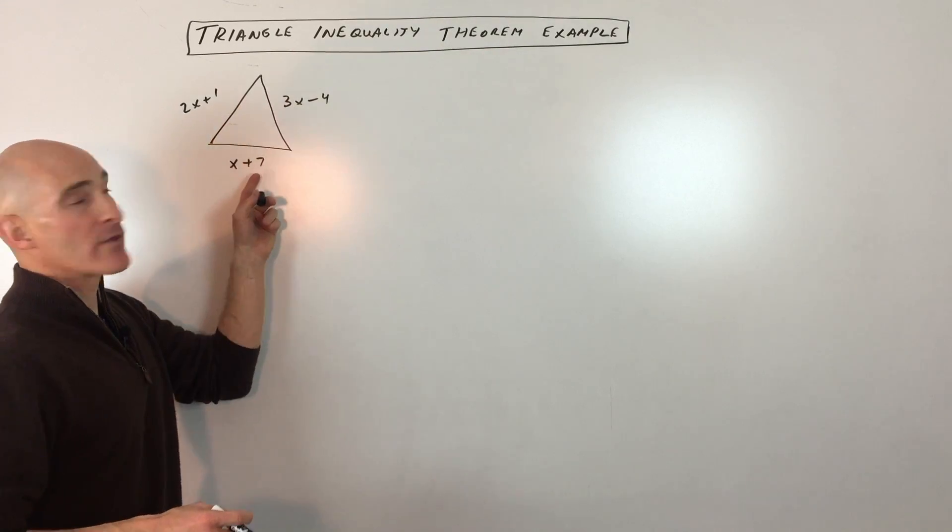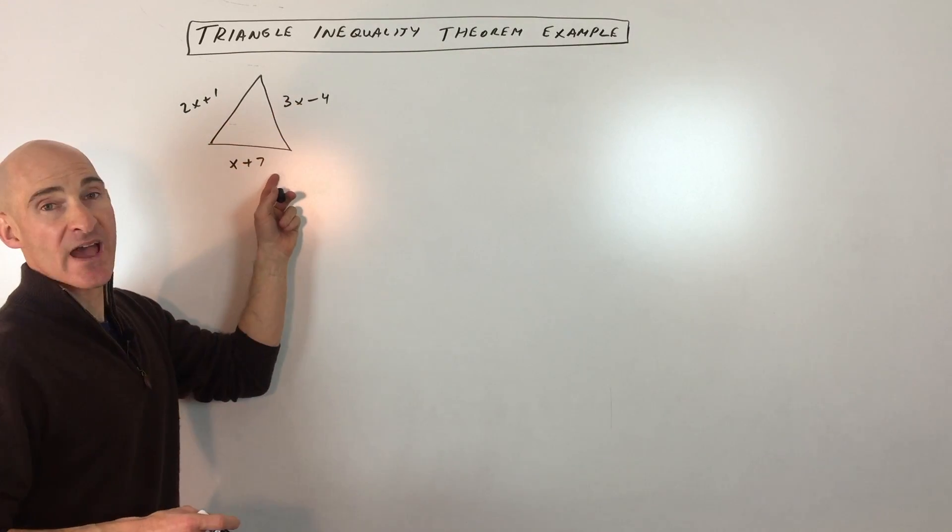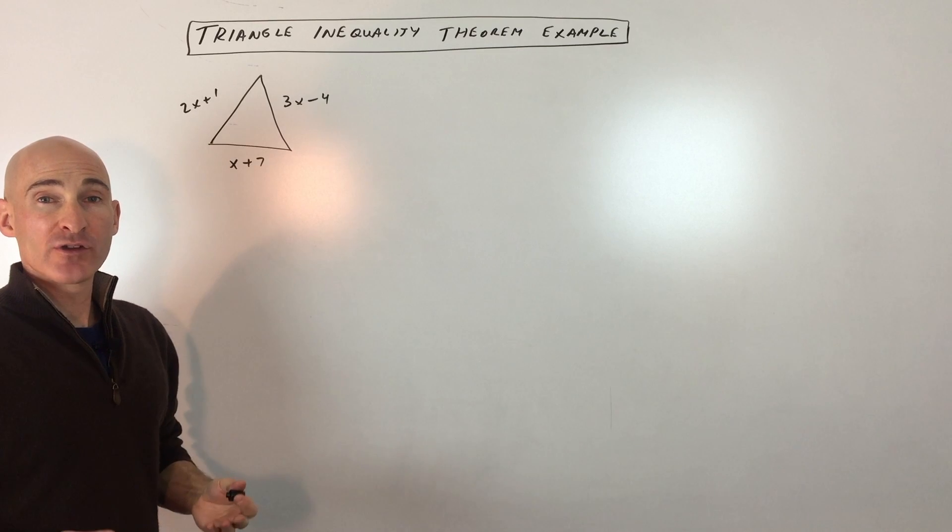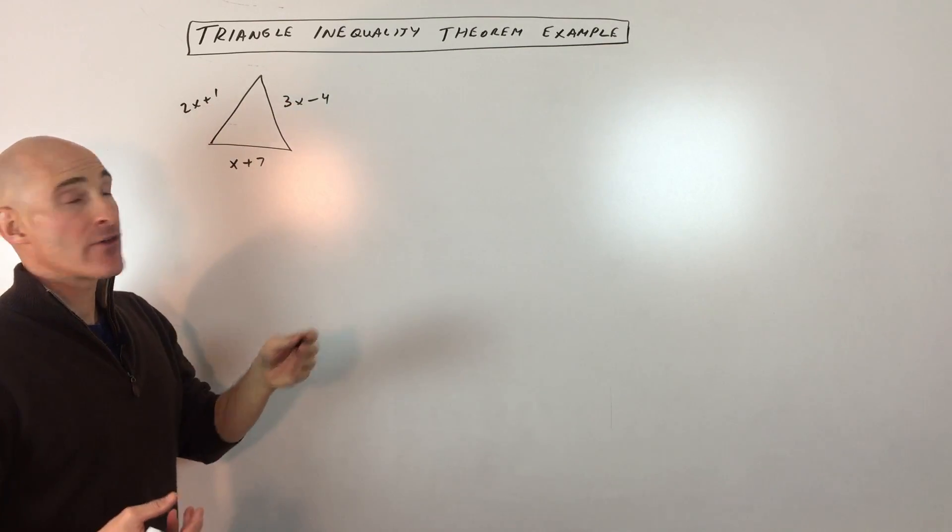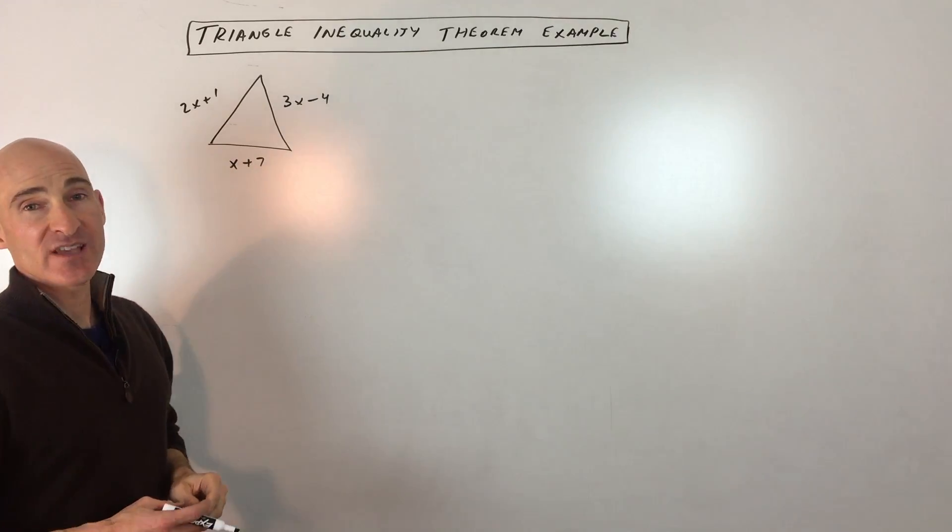Given here is a triangle with three unknown side lengths, but according to the triangle inequality theorem, any two sides when you add them together are going to be longer than the third side.